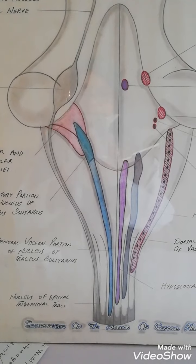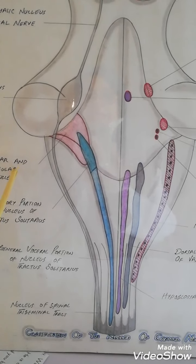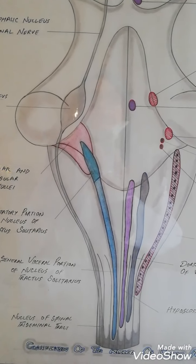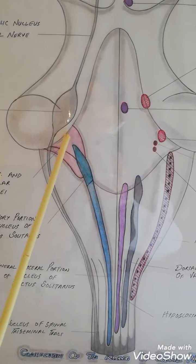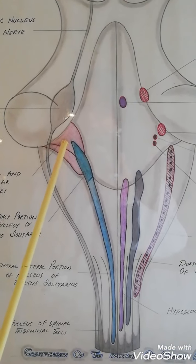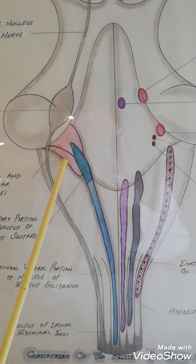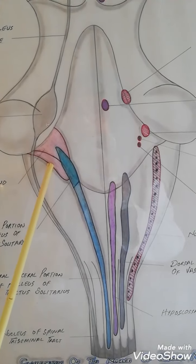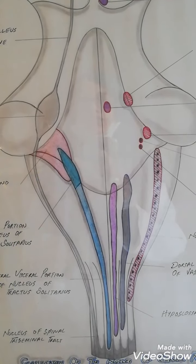Now the eighth cranial nerve — the vestibulocochlear nerve — has two parts: the cochlear part and the vestibular part. The cochlear part has two nuclei — dorsal and ventral. The vestibular part has four nuclei — superior, medial, lateral, and spinal — comprising the full vestibulocochlear nerve.